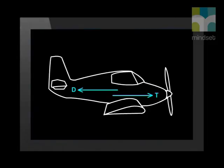So four forces act on the airplane: thrust, drag, lift, and weight. At the moment, the airplane is flying straight and level at a constant speed. The thrust of the propeller is exactly balanced by the drag of the air. So the airplane neither speeds up nor slows down.